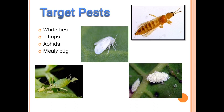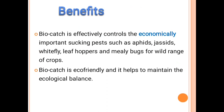The targeted pests of Verticillium lecanii include mealybugs, thrips, and majorly whiteflies. Benefits: it is a beneficial entomopathogenic fungus, easily available, eco-friendly, safe for farmers, and plays an important role in controlling economically important sucking pests. The next entomopathogenic fungus is Beauveria bassiana.